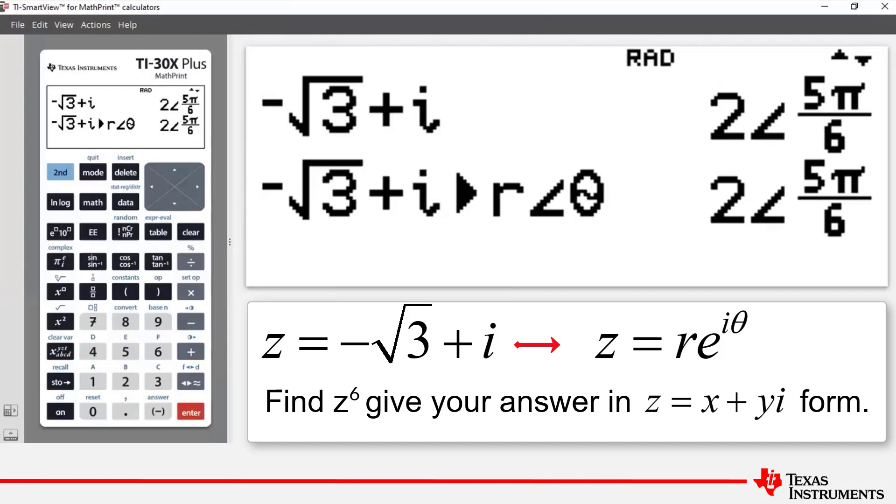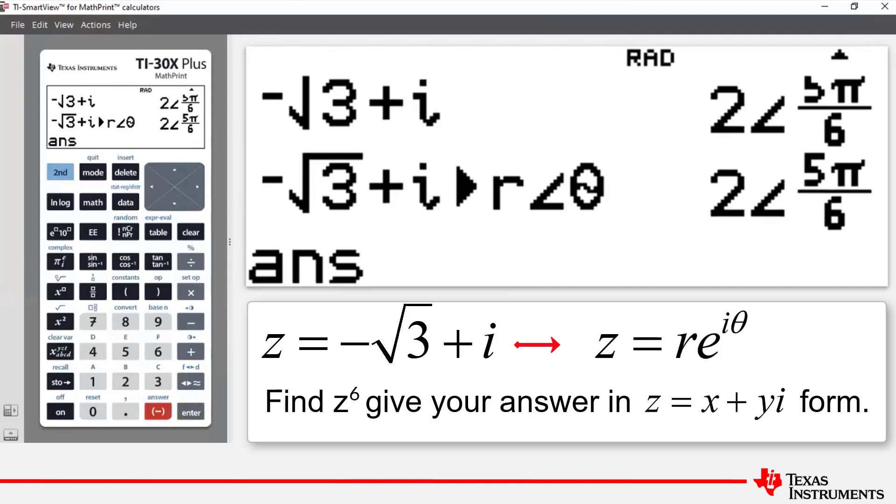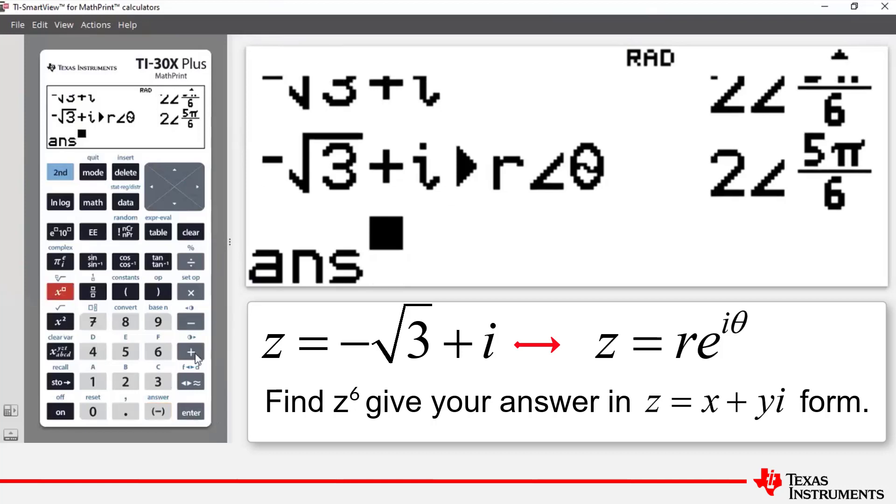But what we can do is we can do it in two stages. So let's take our answer. So press second and then the negation key. And we'll first of all raise it to the power of 3. So we press x to the power button. Enter the 3, therefore the superscript. And press enter. And what we've worked out is that z cubed is equal to 8i.